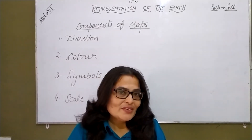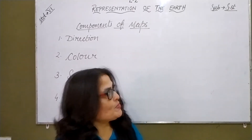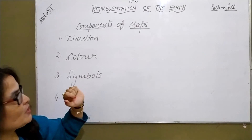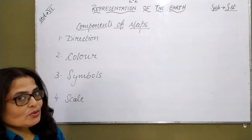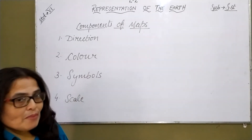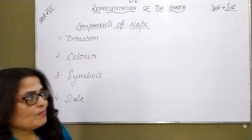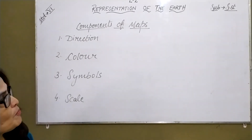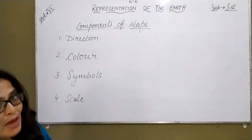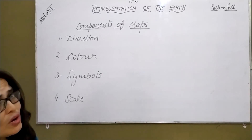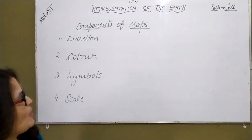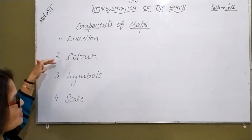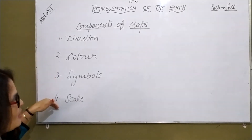Hello everyone. In the chapter 'Representation of the Earth', we have already completed topics about the globe, map, and history of map making. Now our today's topic is components of maps. There are four components of a map: direction, color, symbols, and scale.